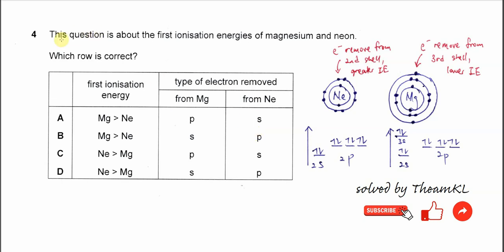Question 4. This question is about the first ionization energies of magnesium and neon. Which row is correct?